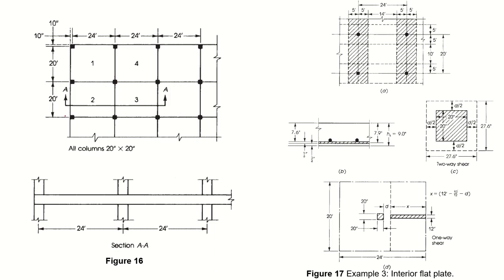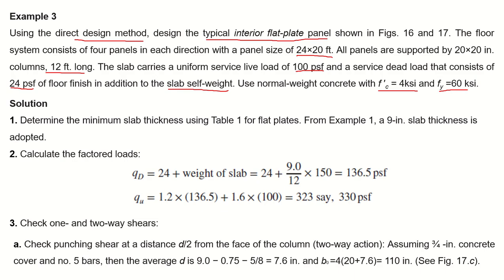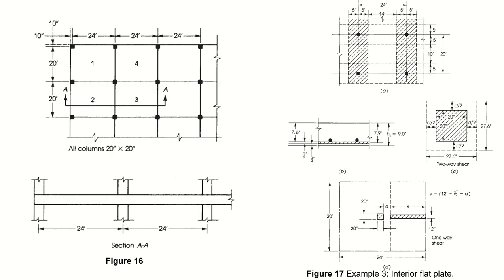In figure 16, the panel length in the long direction is 24 feet and in the transverse direction it is 20 feet. The columns are 20 by 20 inches, so the centerline of the column is 10 inches from the exterior face of the slab system in both directions.